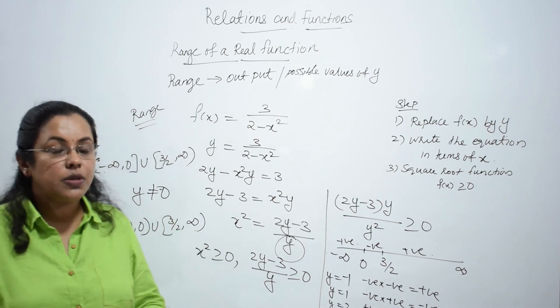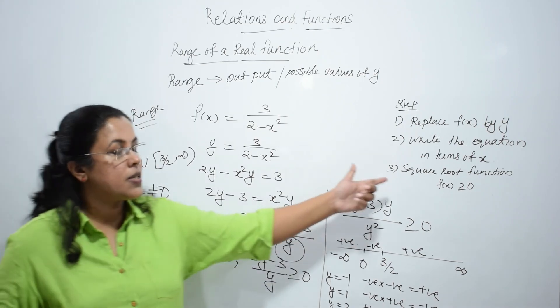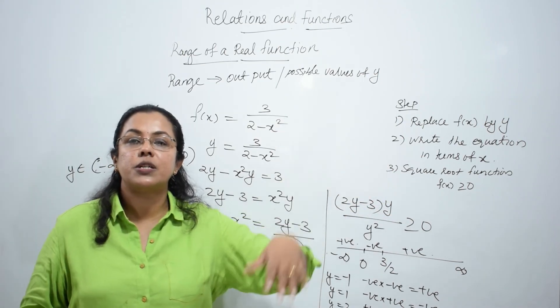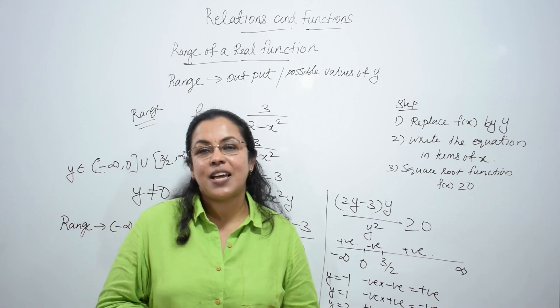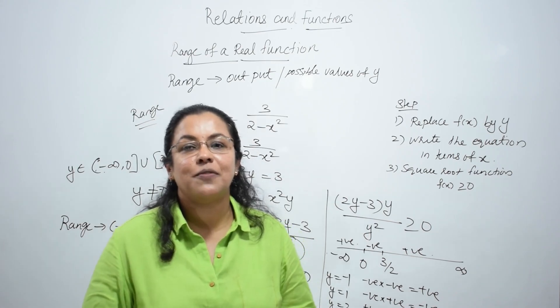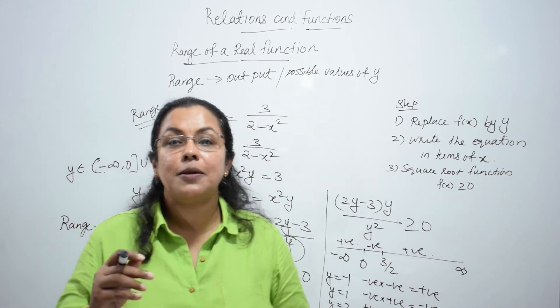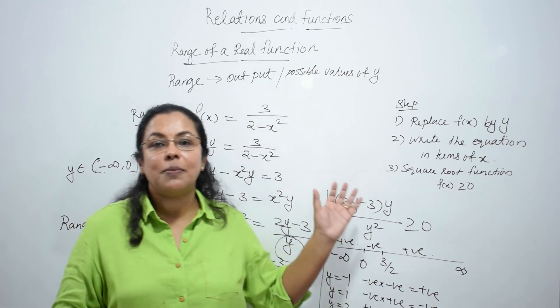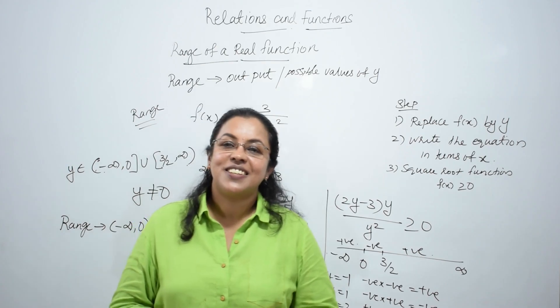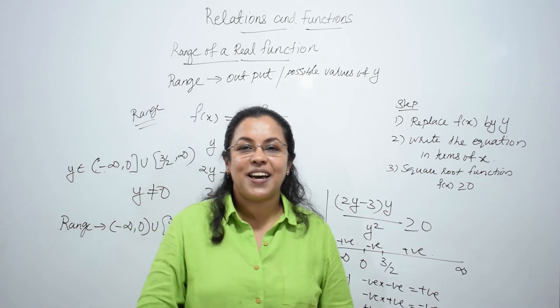Since y cannot equal 0 (it would make x² infinity), the range of the function is (-∞, 0) ∪ [3/2, ∞). First, rewrite in terms of x, apply the condition, and get y ∈ something. Then check if there is any additional condition. Hope all of you are enjoying my classes. Thank you for watching. I will be back with more videos on domain and range of real functions. Bye!